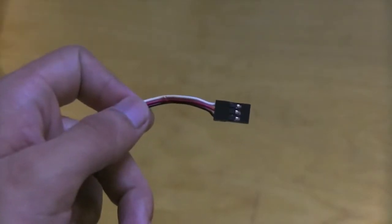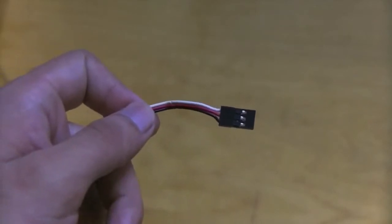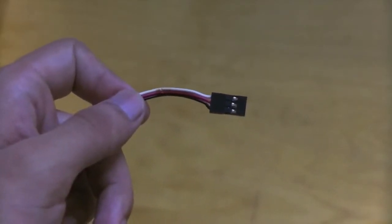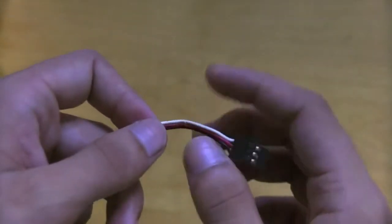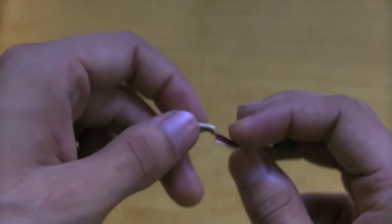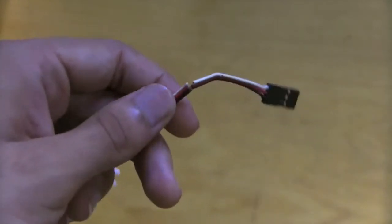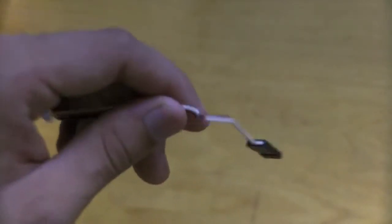This is the cable from the smaller servo. Notice how the signal cable is white instead of yellow. Also, animals like cats love to bite small wires like this, so don't leave them lying around, or you'll basically have a piece of junk.